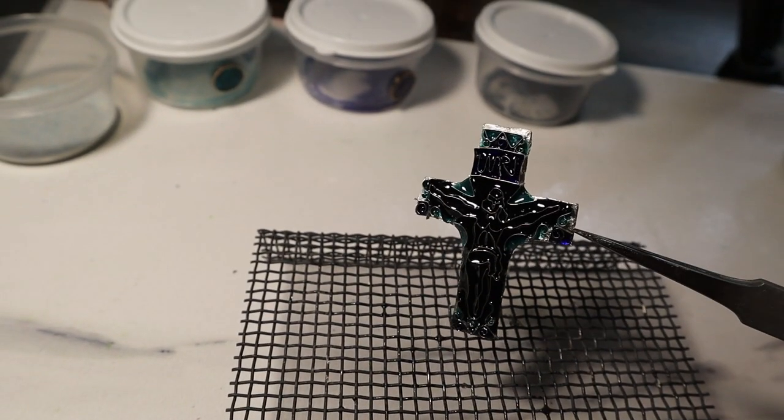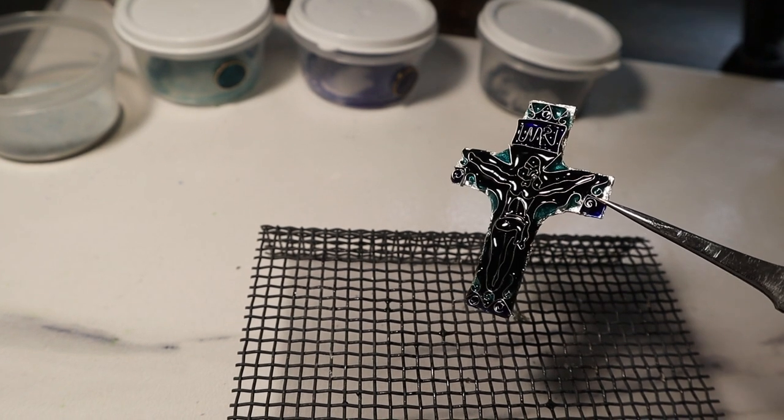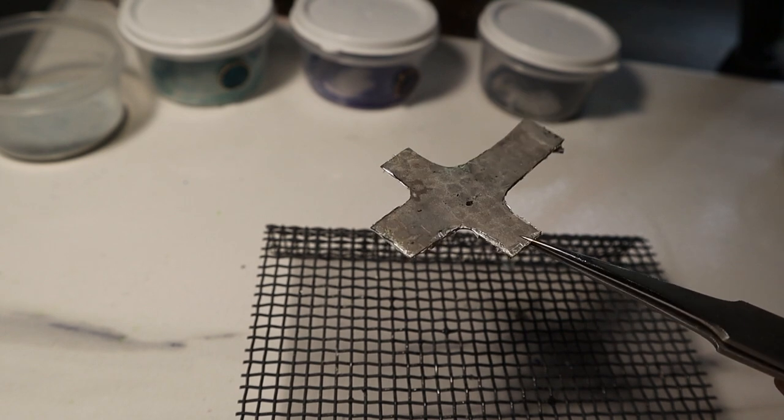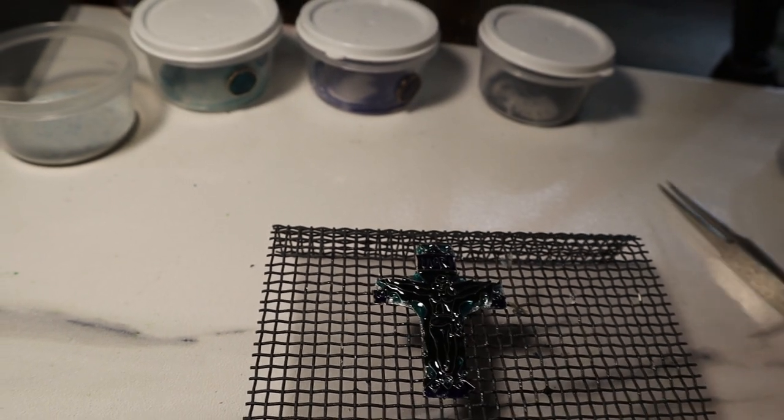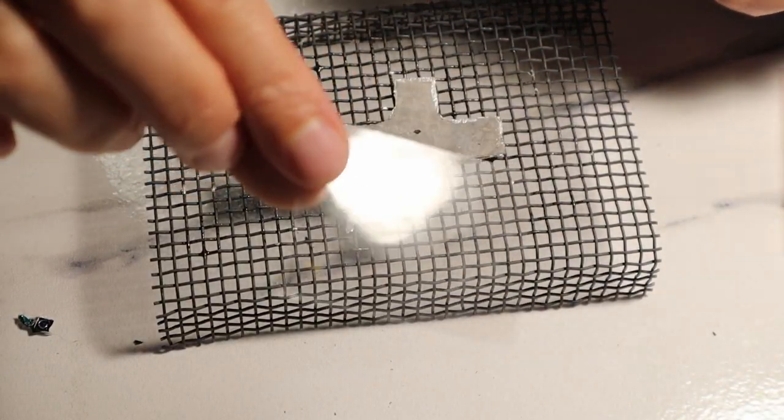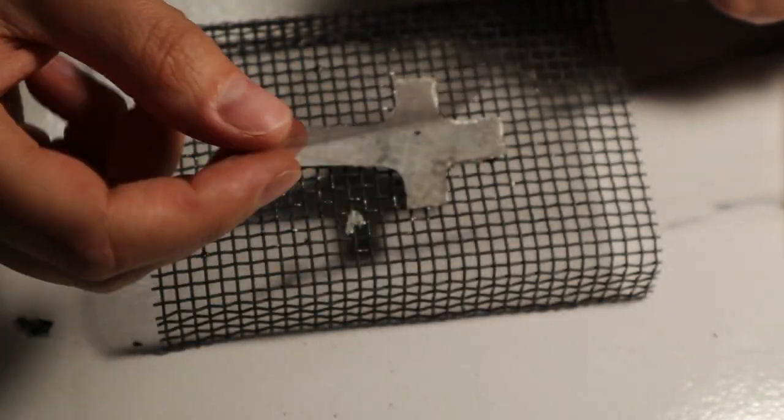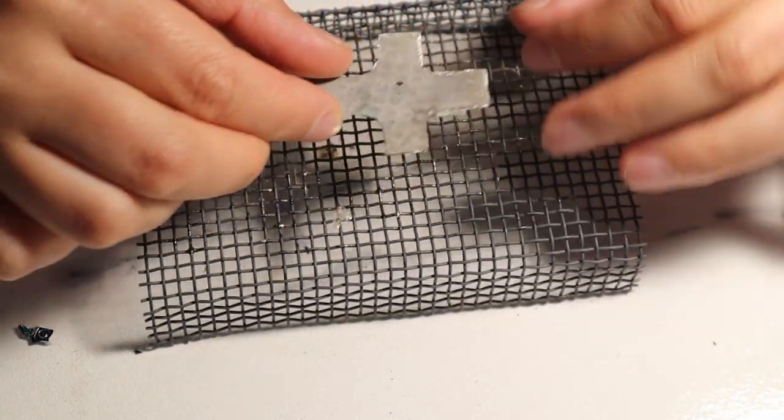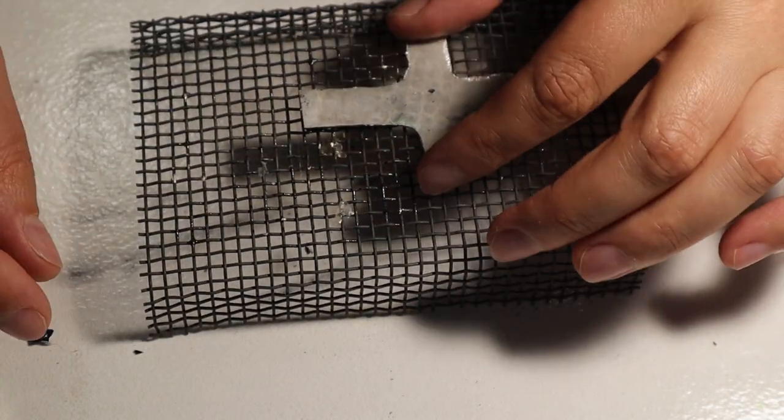We are adding colors, we are adding enamel as many times as needed. We have to fill them, fill all the wires full. Let's place our cross upside down to fill the back with powder of any color. We can use any color.